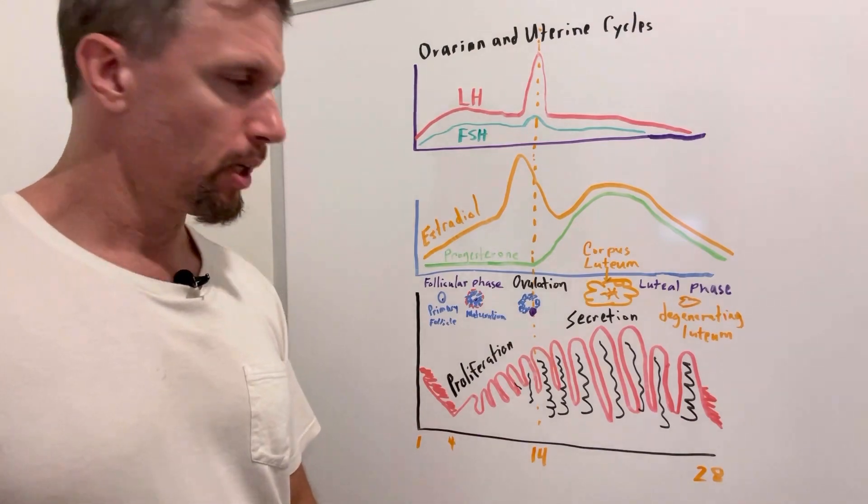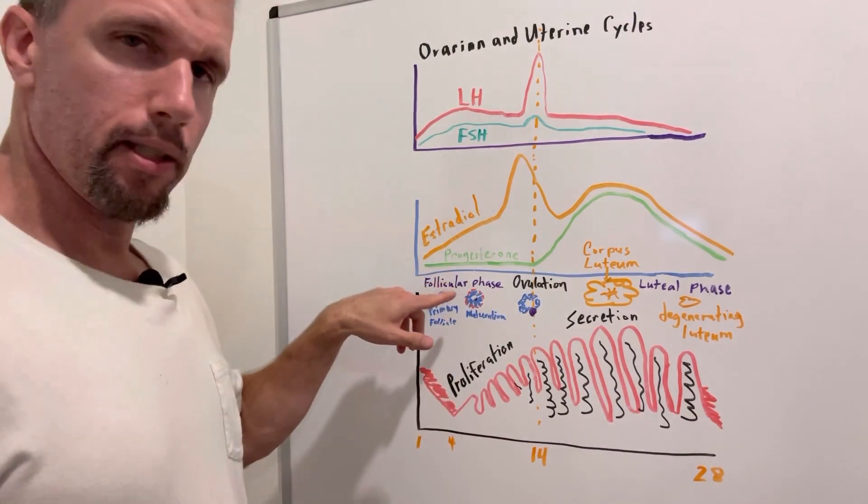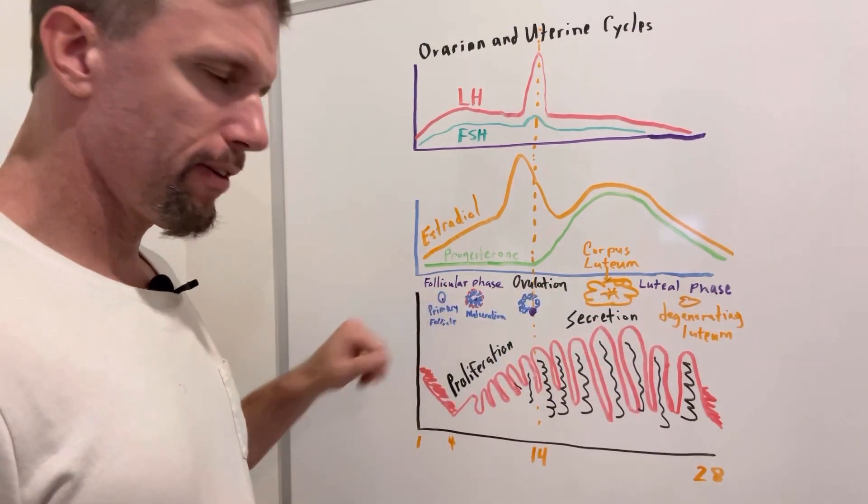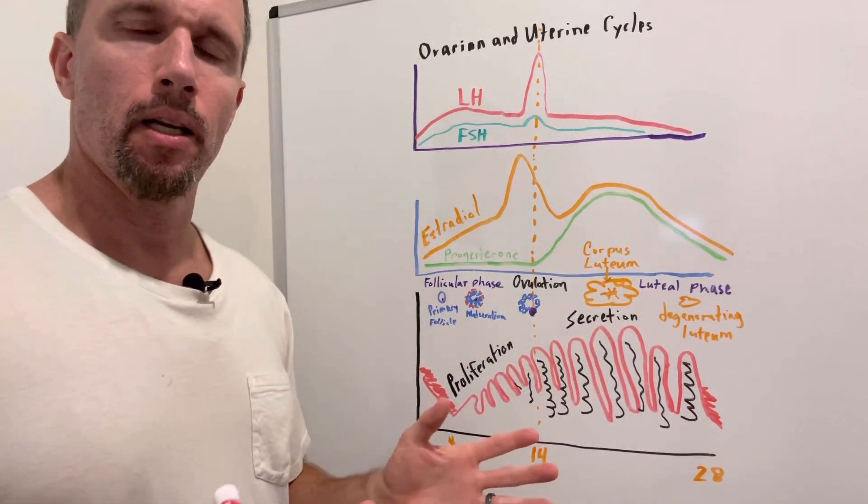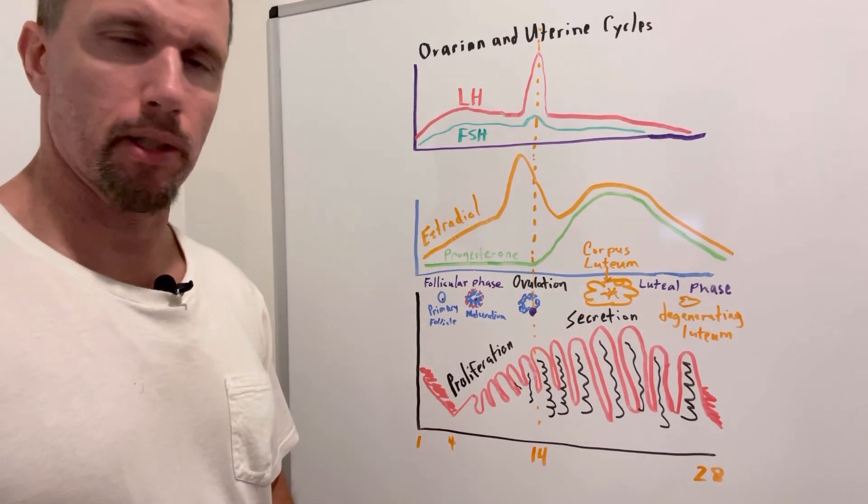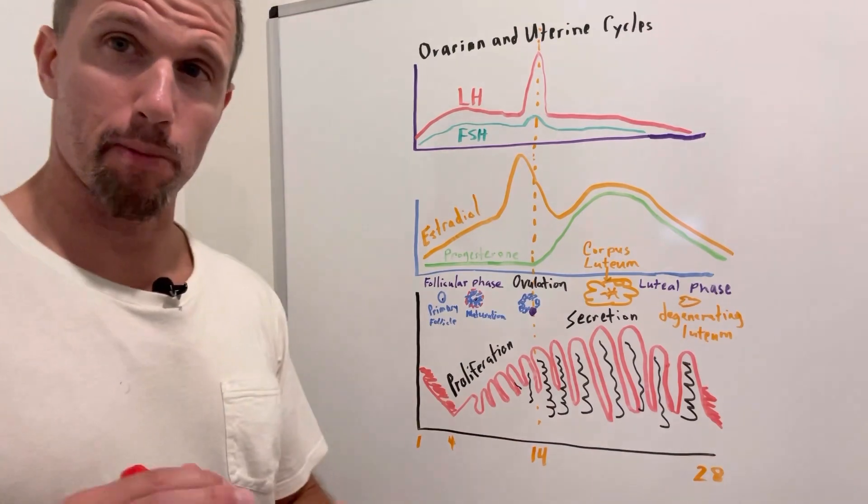It's going to go right to the ovaries, because this is our ovarian cycle here, and it's going to stimulate about 15 or 20 primary follicles that are just stuck in prophase one of meiosis. And they've been there since birth.